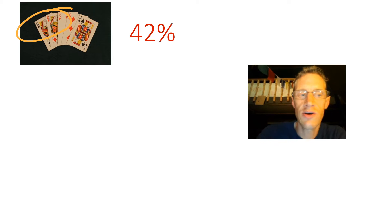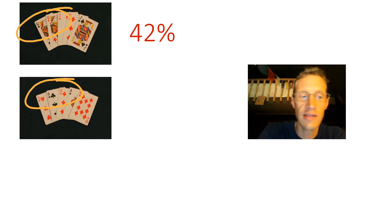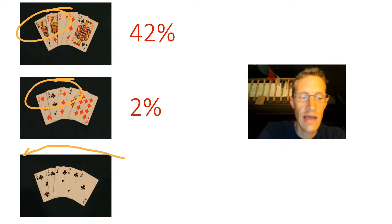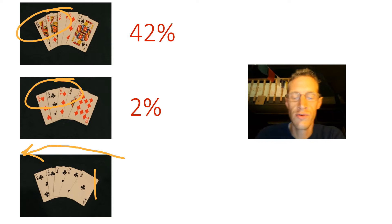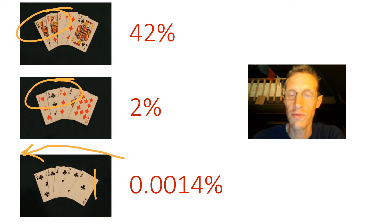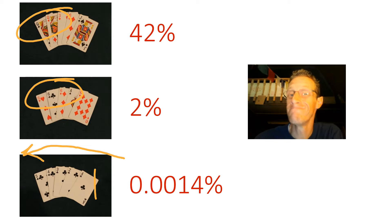Let's talk about the odds for a moment. This is called two of a kind — two queens there. Very low hand in poker, but a good chance of getting it: 42%. This is called three of a kind — three sixes. A little better hand, but a much lower chance of getting that: only 2%. Take a look at this one — this is a straight flush. The ace acts like a one, and those cards are all in a row and all the same suit. Incredibly good hand, but very low odds of getting it: 0.0014%. So when someone goes into a casino and starts gambling, security is looking for something unexpected. They know these odds, and if they see someone beating them, something is up.